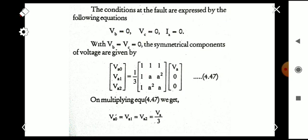We are going to substitute the values of VB and VC into the symmetrical component equation derived from the unbalanced components. Substituting zeros for VB and VC and solving the matrix, we get VA0 equals VA1 equals VA2 equals VA divided by three, where VA0 is the zero sequence voltage component, VA1 is the positive sequence component, and VA2 is the negative sequence component.